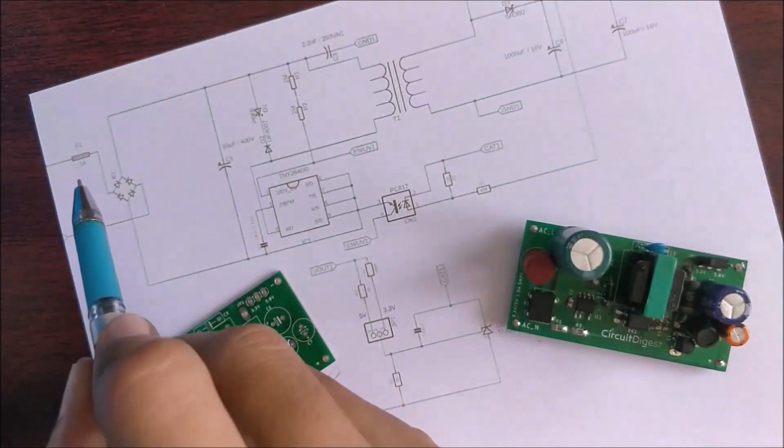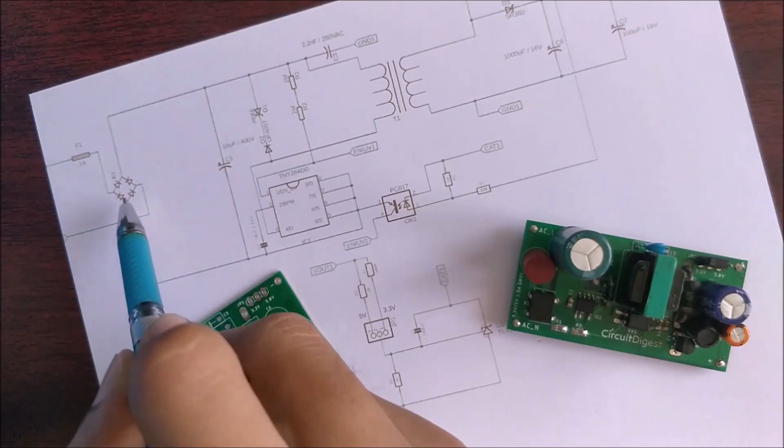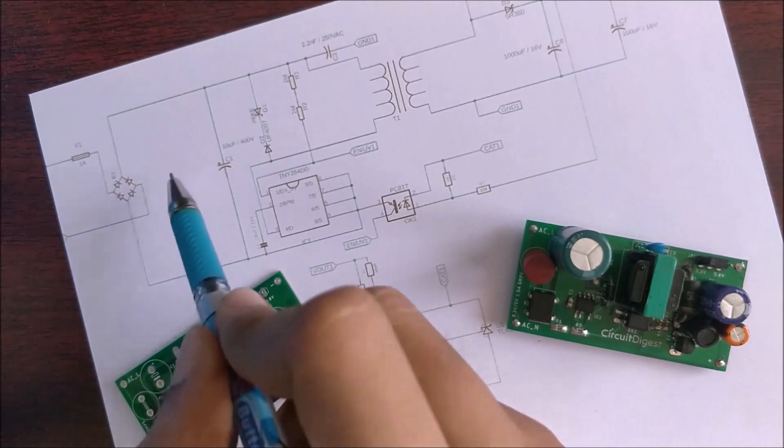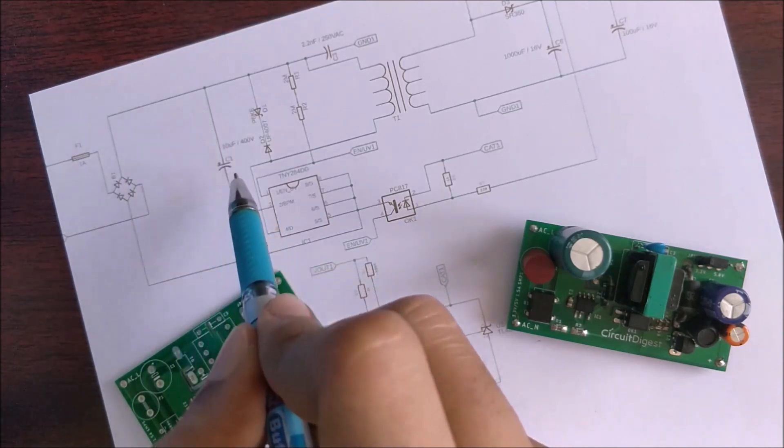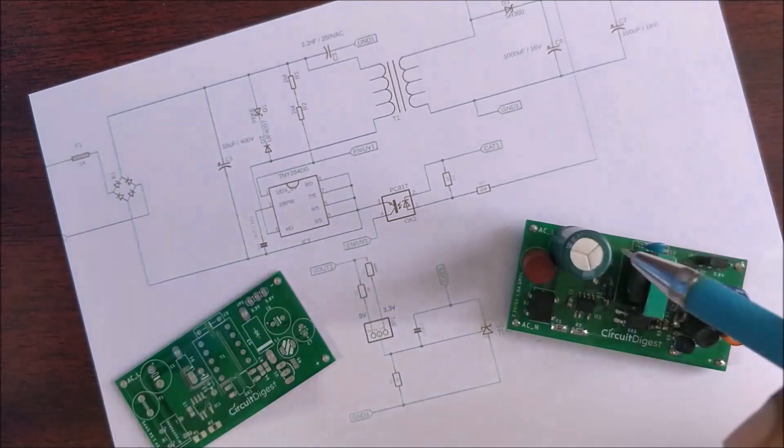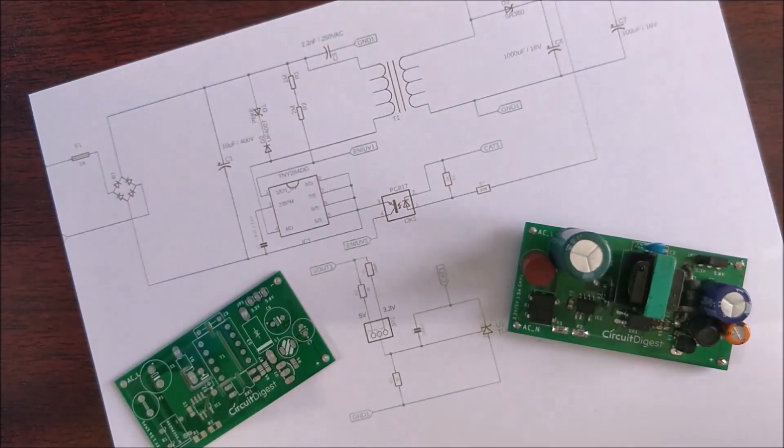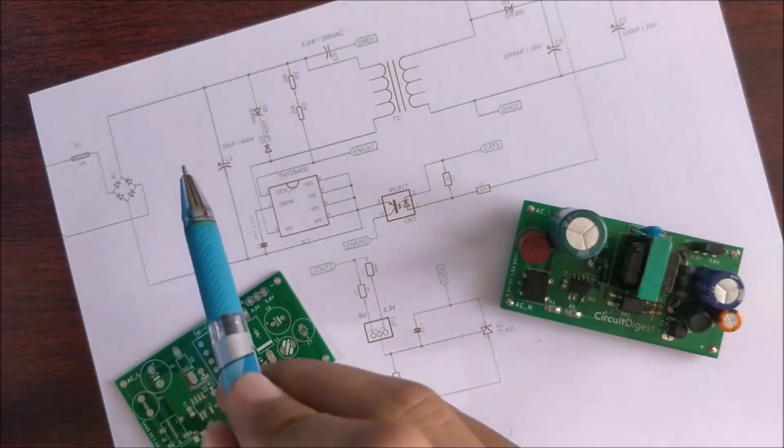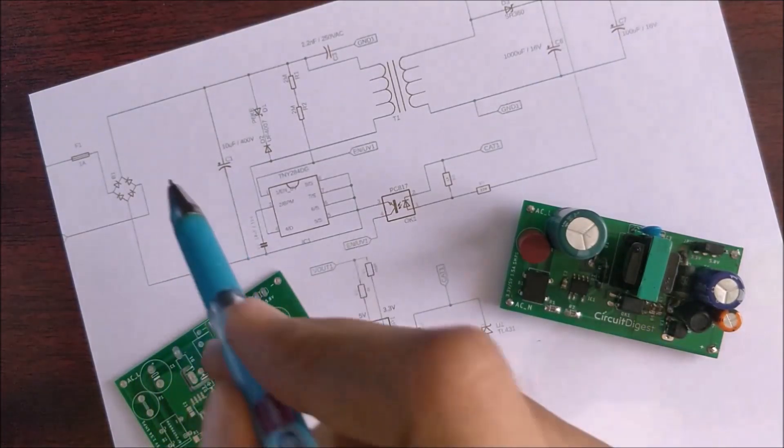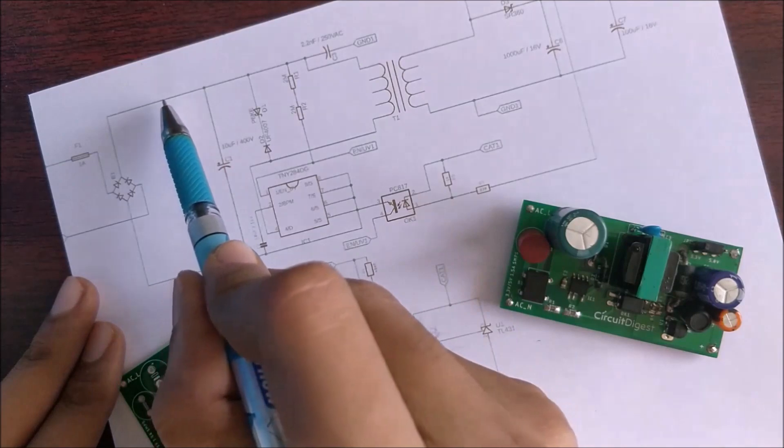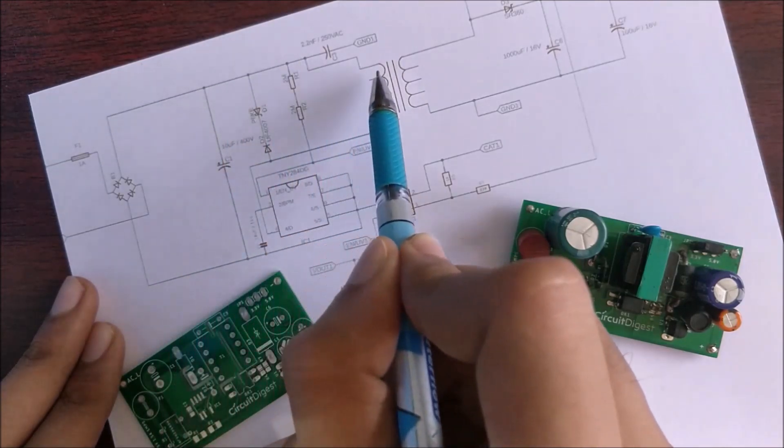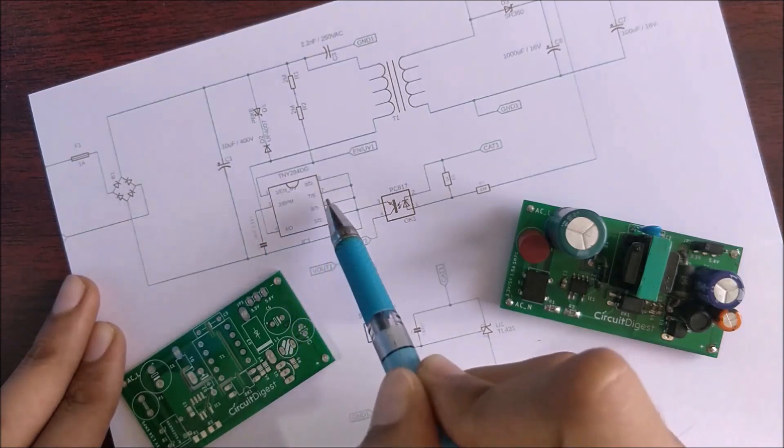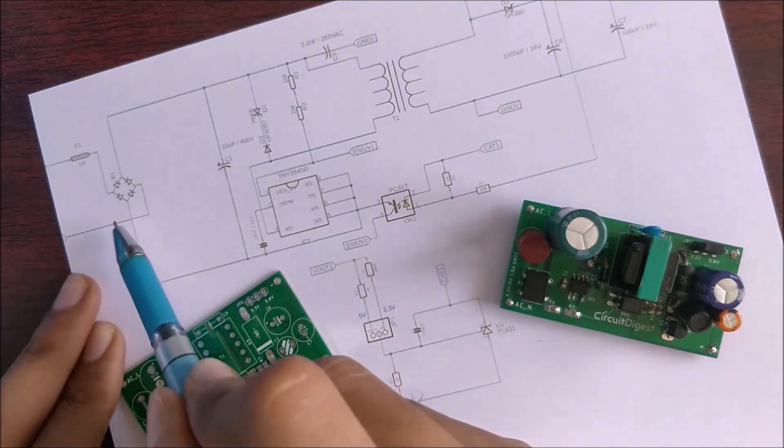The fuse is used for input protection and the bridge rectifier converts the AC mains to DC. Then this DC voltage, like all rectifiers, will be filtered using our filter capacitor over here which is rated for 10 microfarads and 400 volts. This will remove any ripples that were present in our DC voltage. Now taking a closer look you can see that this DC voltage goes in through a transformer and then comes back to our switching regulator IC.